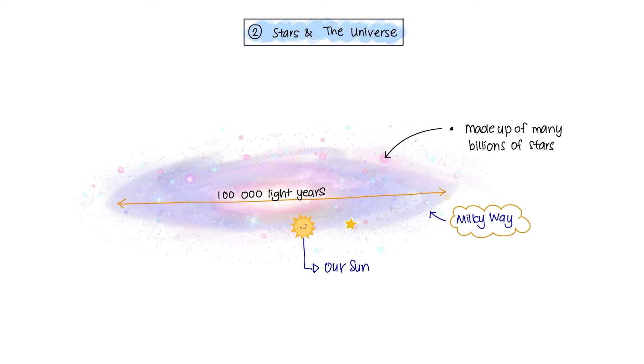However, our Sun is only one of billions of stars in a galaxy called the Milky Way, with a diameter of 100,000 light-years. Astronomical distances can be measured in light-years, where one light-year is equal to 9.5 × 10^15 meters. And other stars that make up the Milky Way are much further away from the Earth than the Sun is from the Earth.